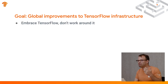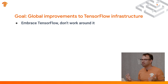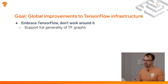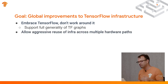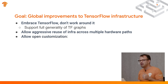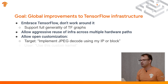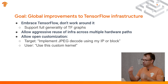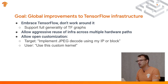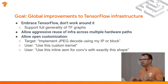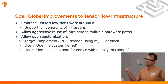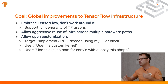A couple of other goals: we want to embrace TensorFlow as one of our main targets and support the full generality of TF graphs. We want to allow aggressive reuse of infrastructure across multiple hardware paths. Similar to TensorFlow, we want to allow open-core simulation — we want a target to be able to say, implement my JPEG decoder using this block, or say hey, I actually have a custom kernel; for this model I'm running, I want to see its performance, so use my kernel. Beyond that, we want to enable folks to experiment with their own lower-level implementations of operations — if the compiler is not there yet, or the researcher has a better idea, or we have an ML algorithm generating code, we want to be able to plug that into the same system.